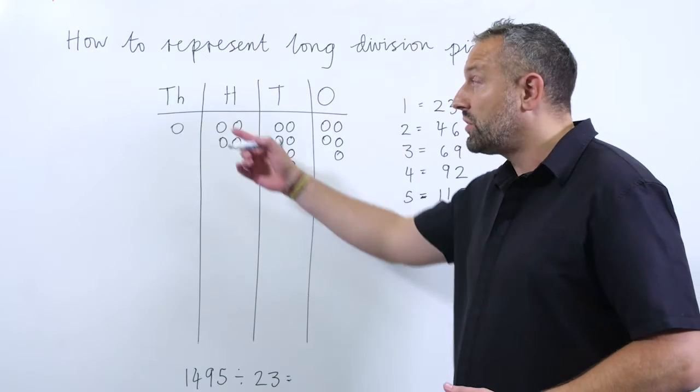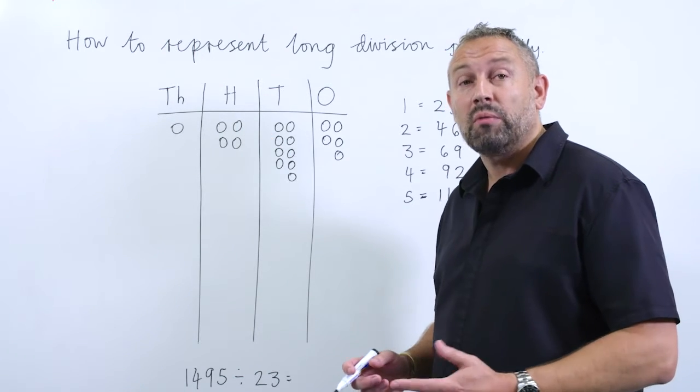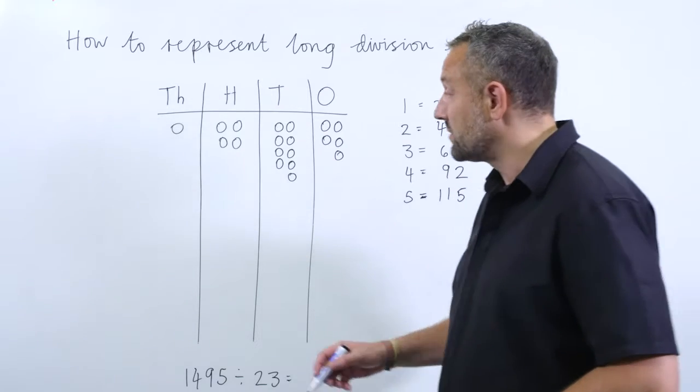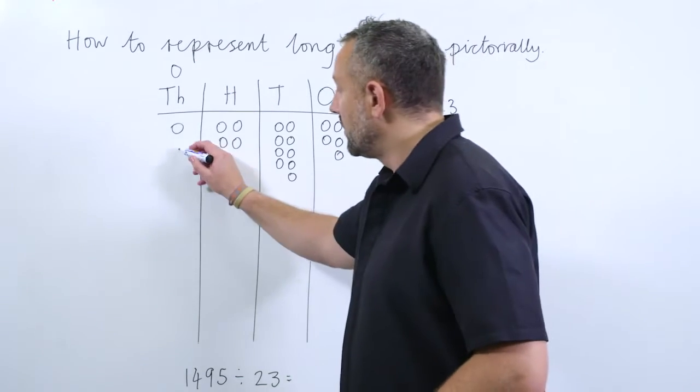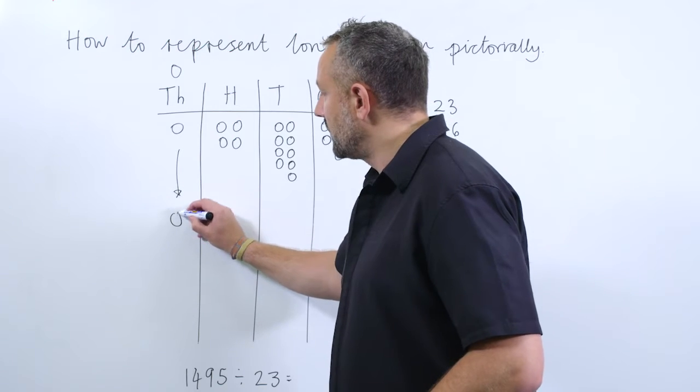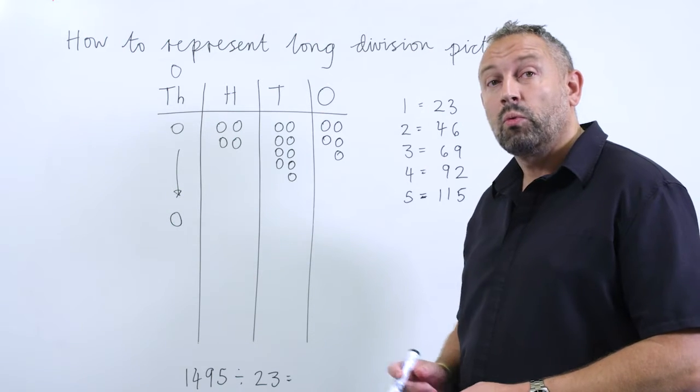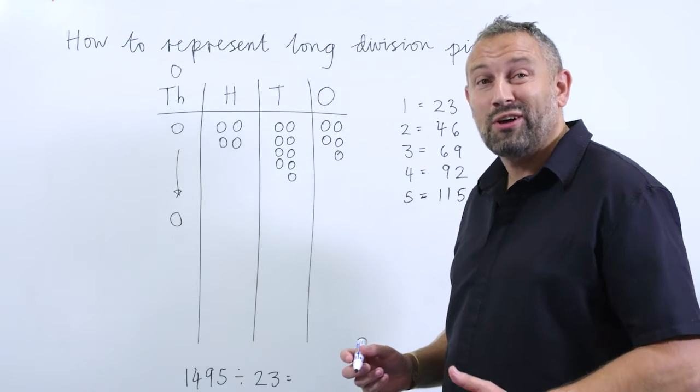Okay, so we have to look at how many 23s, how many groups of 23 we can make out of our 1000 counter, and the answer is 0. So we pull down our counter. We then move to the next column to the right, which is our hundreds column.